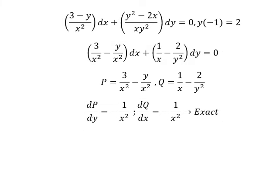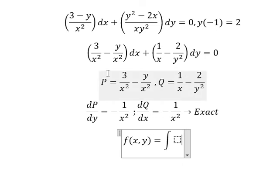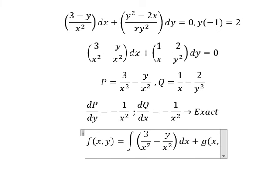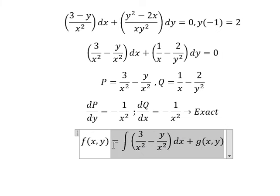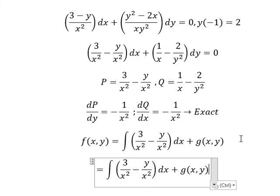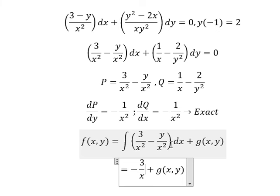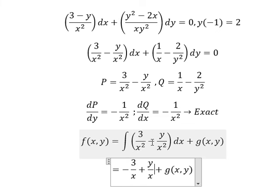So we need to set up the function F(x, y) equal to the integral of P with respect to x, plus g(y). The integral of 3 over x squared gives about negative 3 over x. The integral of negative y over x squared gives about positive y over x, because the integral of negative 1 over x squared gives 1 over x.